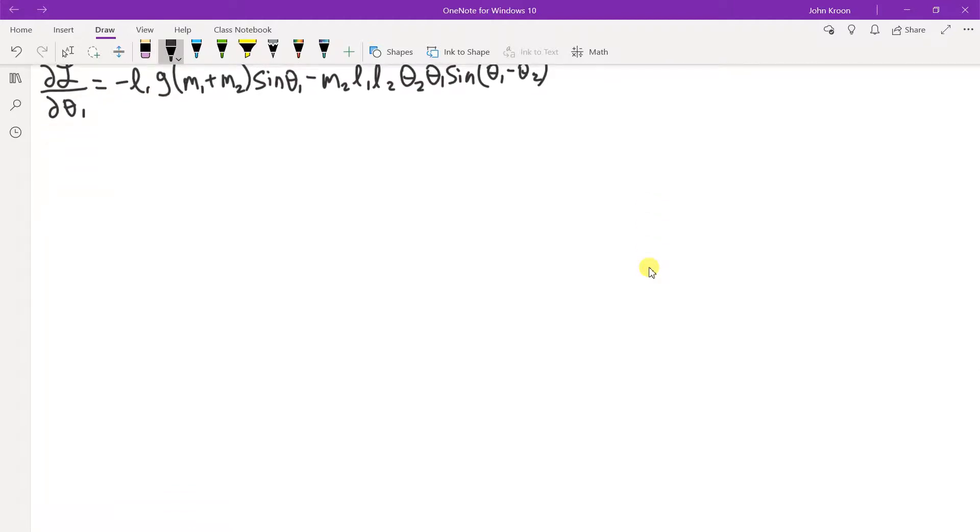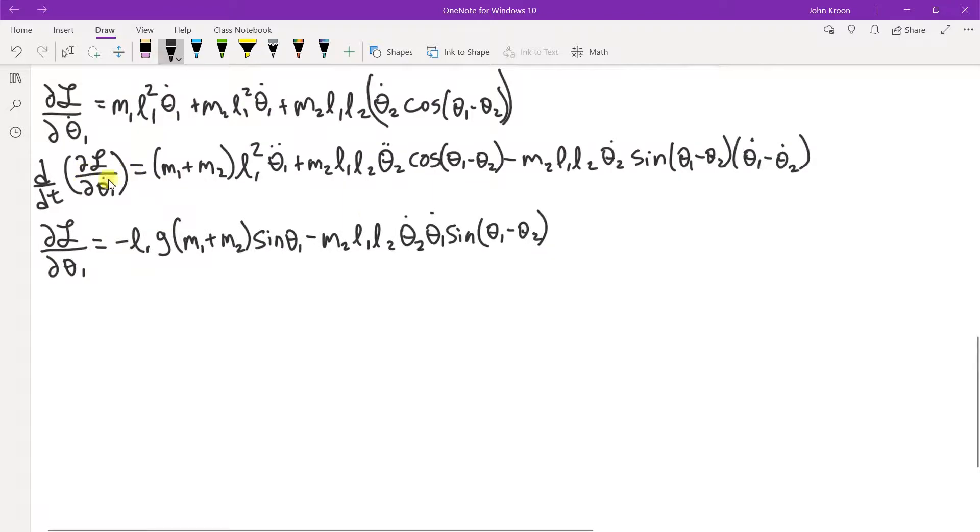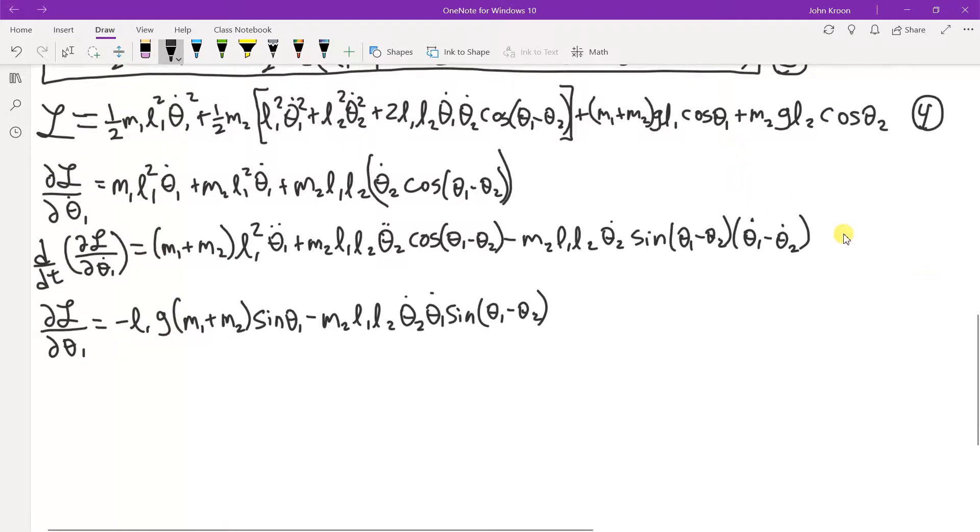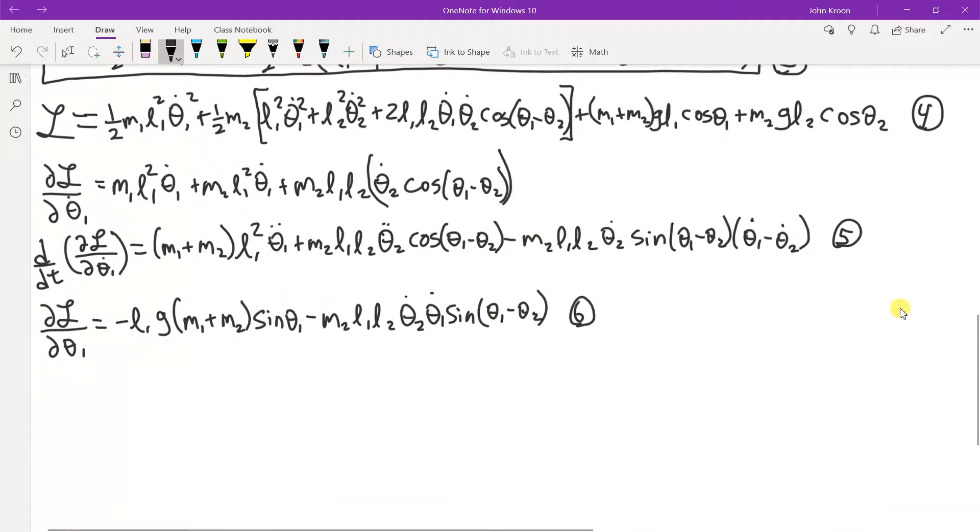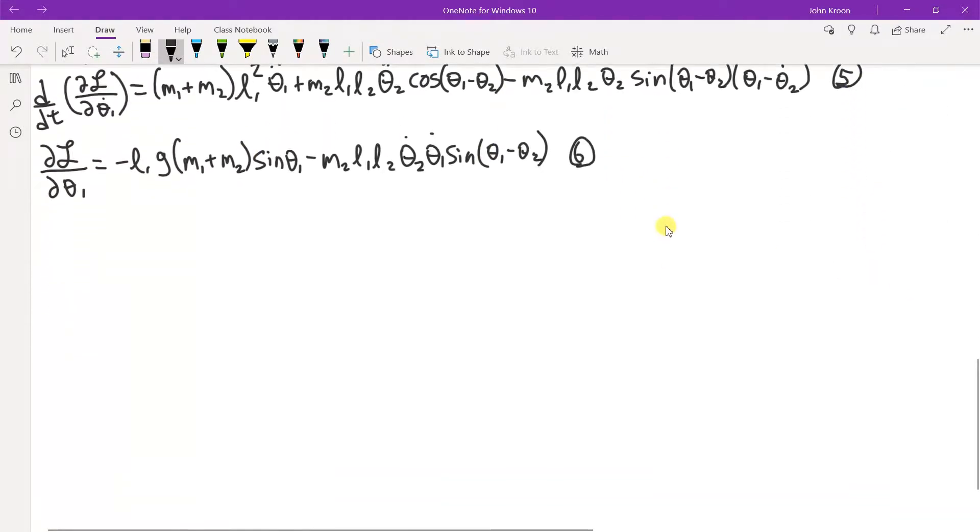So what we have now is just an assembly problem. All we've got to do is put these together. It's this term, and then we have equation 5 and 6. So because of equation 1, this term minus that term equals 0.